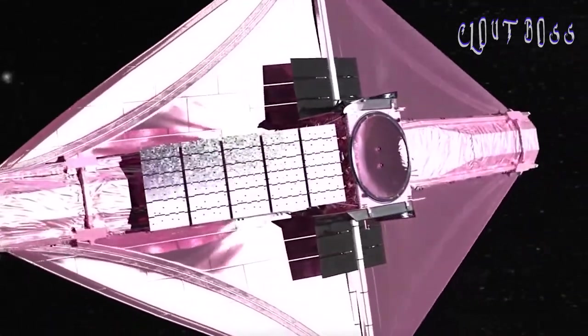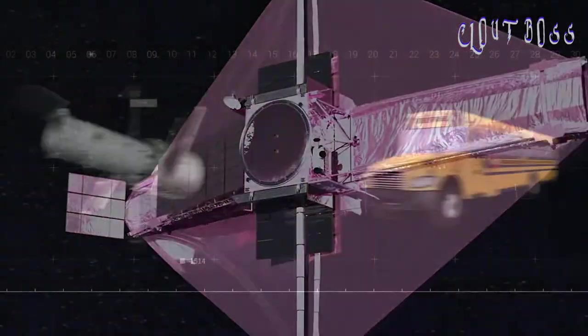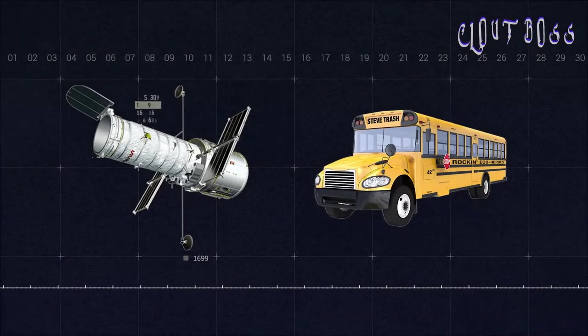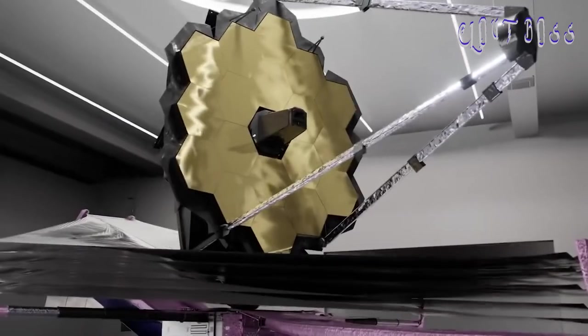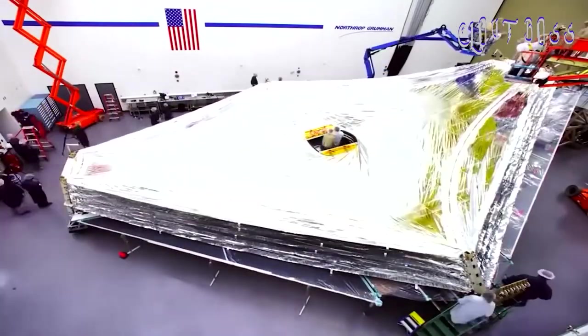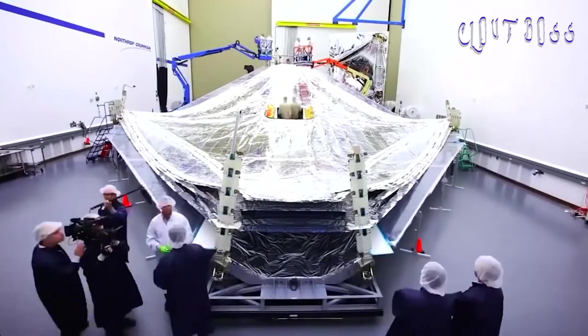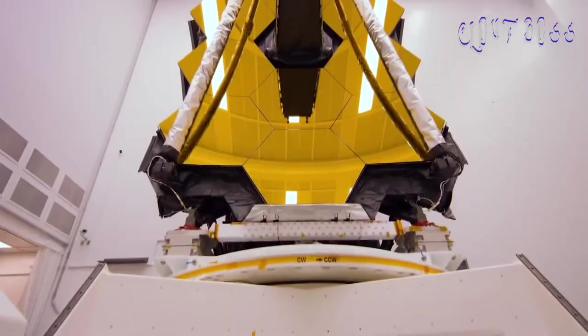The JWST improves on Hubble in two key ways. The first is the sheer size. While the Hubble was about the size of a school bus, the JWST is more like the size of a tennis court. It is so enormous that it is by far the biggest telescope NASA's ever attempted to send into space. But the size is not the only improvement here that matters.